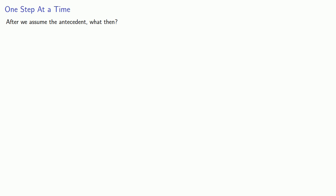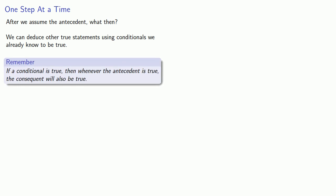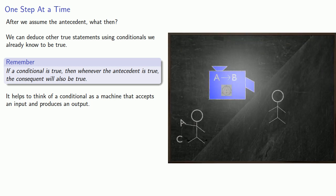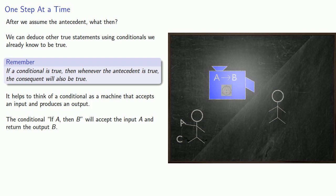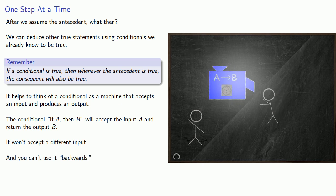After we assume the antecedent, what then? To proceed with the proof, we can deduce other true statements using conditionals we already know to be true. If a conditional is true, then whenever the antecedent is true, the consequent will also be true. It may help to think of a conditional as a machine that accepts an input and produces an output: if A then B will accept input A and return output B. It won't accept a different input, and you can't use it backwards by supplying the output.